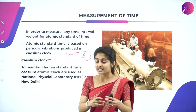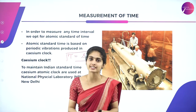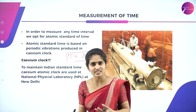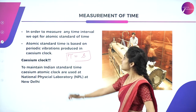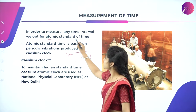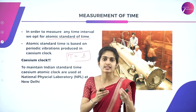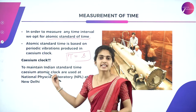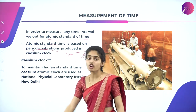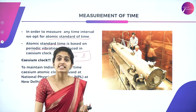One second is equal to the vibrations made by the cesium-133 atom. In order to measure any interval of time, we use the atomic standard of time, which depends upon the number of vibrations related to one second. The atomic standard of time is based on periodic vibrations produced by a cesium clock.